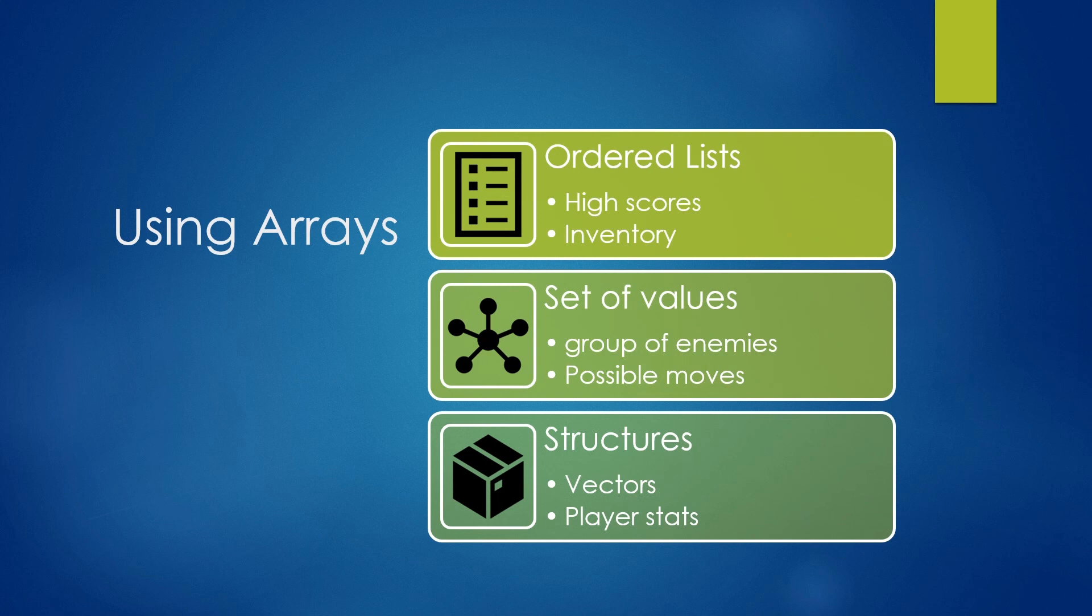So when can you actually use arrays and what are they good for? You can use them as ordered lists, which is great for high scores or maybe an inventory system. They're also capable of being used as sets of values. So maybe you want a group of enemies where the order doesn't really matter, or maybe a set of possible moves where you just want to tell the player what he can do. Finally, you can also use them as structures. An example of that would be vectors, where you may have one or two values inside your array and player stats. Maybe you have its health and so on.